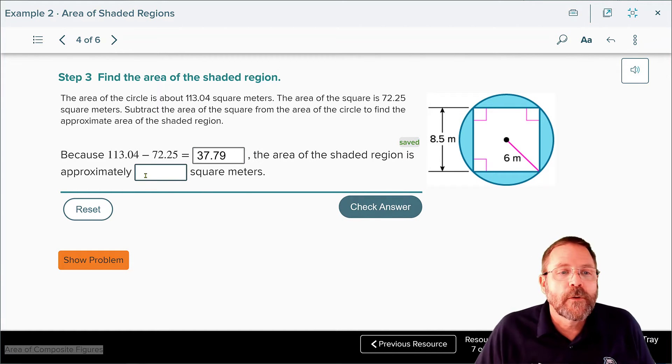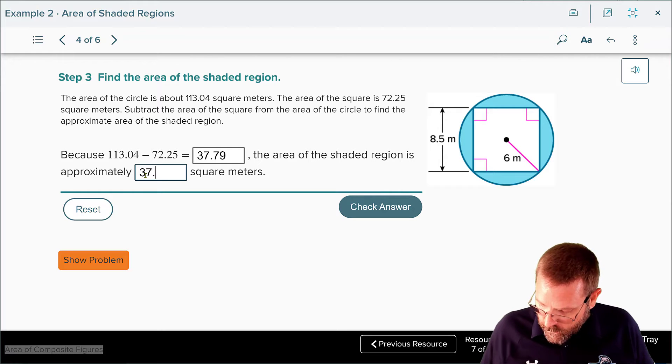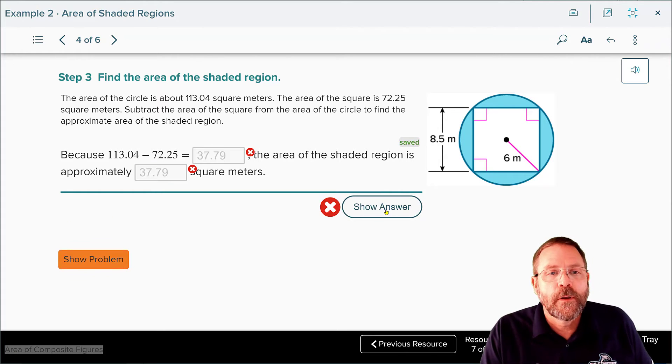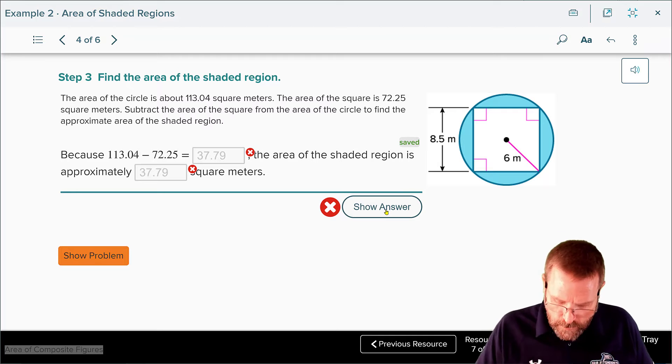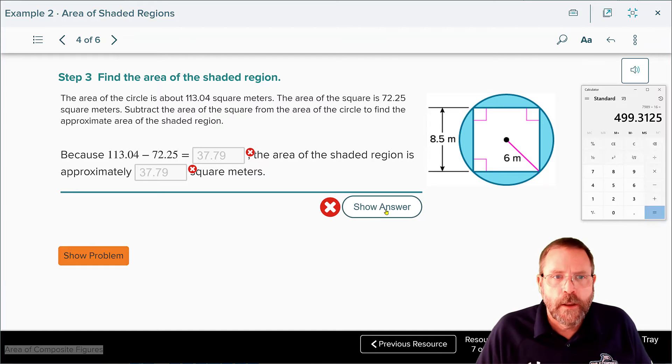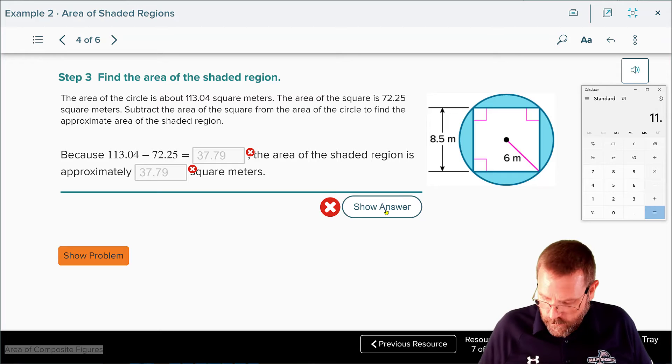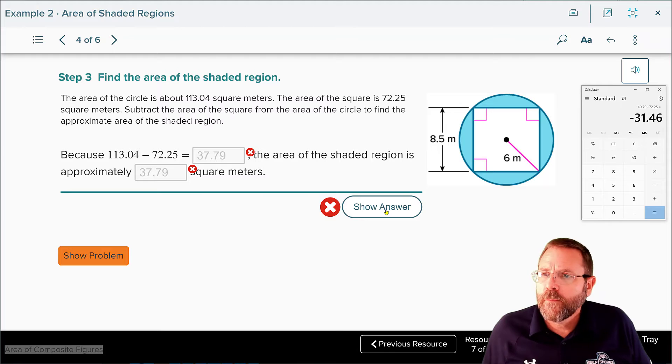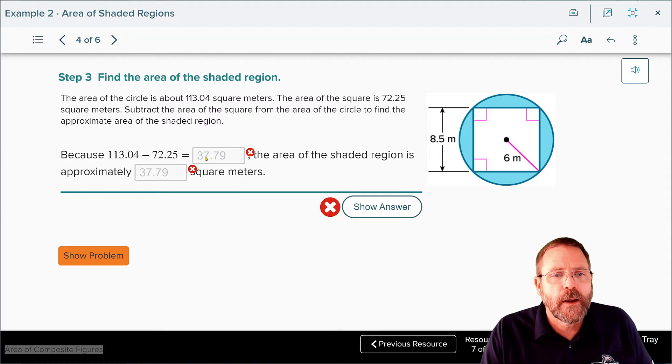And check, oh hold on, we're going to put our 37.79 here as well. Somewhere I did a mathematical boo-boo. Let's check my work by taking 113.04 minus 72.25 and, whoops, it was 40.79. Not sure how I got that far off. 40.79 it is. Totally my bad.